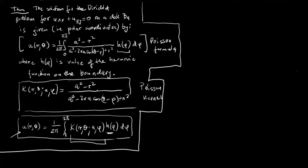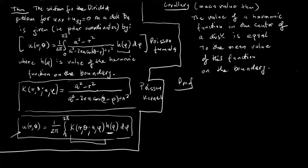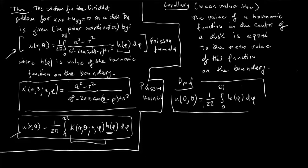A very quick corollary from this theorem is the mean value theorem, which says that the value of a harmonic function at the center of the disk equals the mean value of this function on the boundary of the disk. The proof is very easy using the Poisson formula: we evaluate the function at r = 0 (where theta doesn't matter), and from the Poisson formula we get simply (1/2π)∫₀²π h(φ) dφ, which is precisely the mean value of h over the circle. That is the proof.